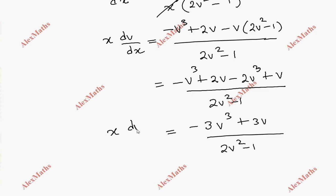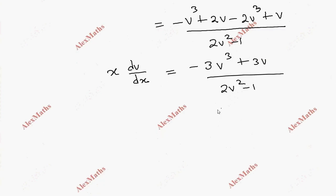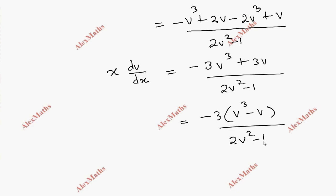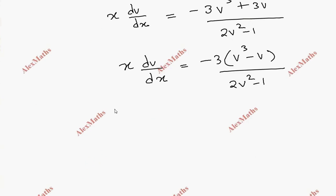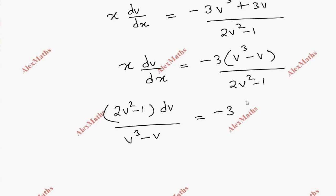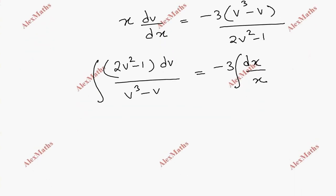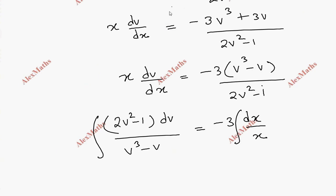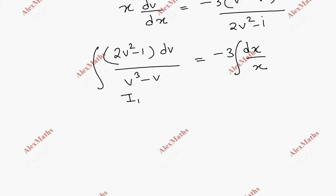This is x·dv/dx. Now we apply variable separable. So: (2v² minus 1) / (v³ minus v) dv = minus 3 · dx/x. Integrating both sides.